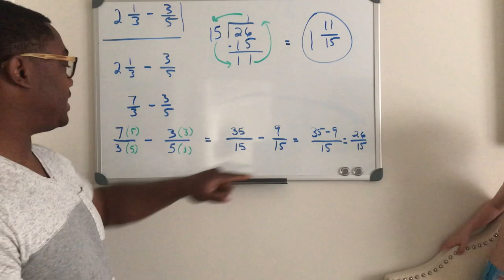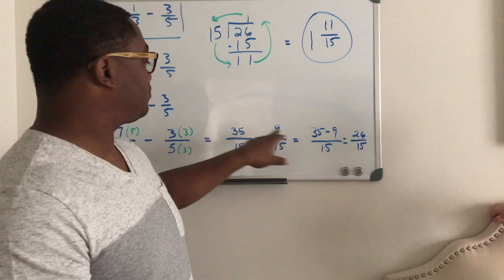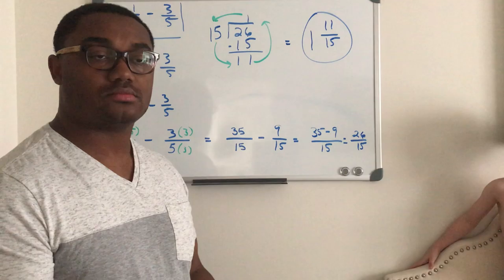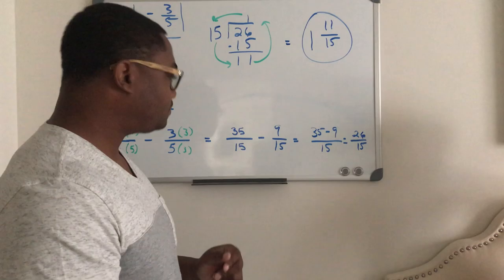And so 7 times 5 is 35, and 3 times 5 is 15. You have this 3 times 3 which is 9, and this 5 times 3 which is 15. And because we have a common denominator here, we just put 35 minus 9 over 15, and 35 minus 10 is 25, plus 1 which is 9, will be 26.